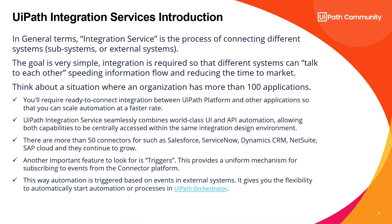The biggest advantage is triggers. A trigger is a uniform mechanism through which you can subscribe to events happening in a target system. For example, if you want to perform some automation when something happens in a target system, you listen for events on that system. Triggers give you the capability to start your automation based on those events — say, when an incident is created in ServiceNow, you immediately trigger your process to complete certain tasks.